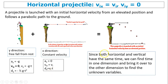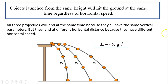One key strategy: since both horizontal and vertical directions share the same time, we can find time in one dimension, then bring it over to the other dimension to find unknown variables. We use the same strategy for projectiles launched at an angle. Objects launched from the same height will hit the ground at the same time regardless of horizontal speed, because horizontal and vertical components are independent of each other.